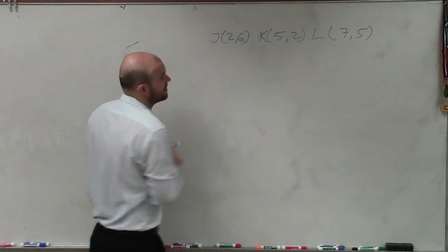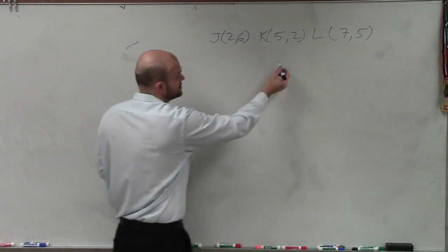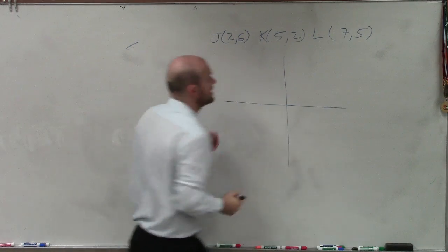90 degrees, right? So in this case, they want us to rotate this triangle 90 degrees. To do that, the first thing we need to do is obviously plot our points.